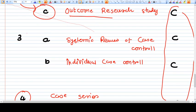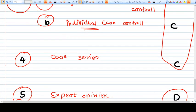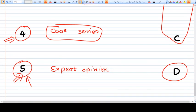Now come to level 3. 3a means systematic review of case control study. 3b means individual case control studies. Level 4 is case series. Level 5, the weakest, is expert opinion.